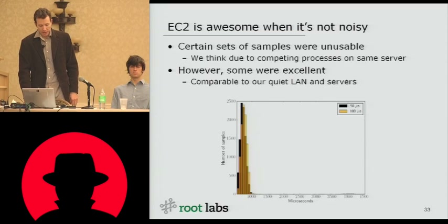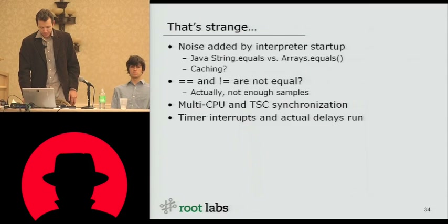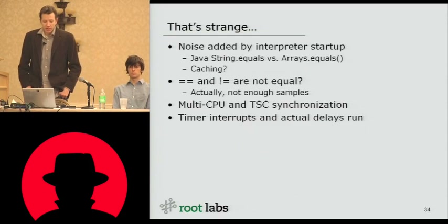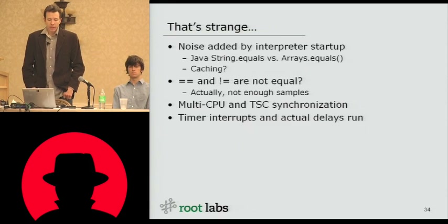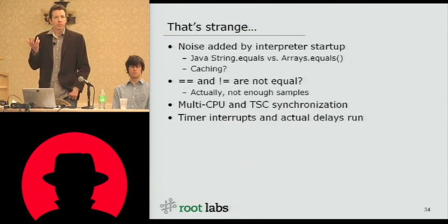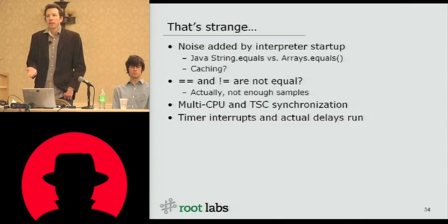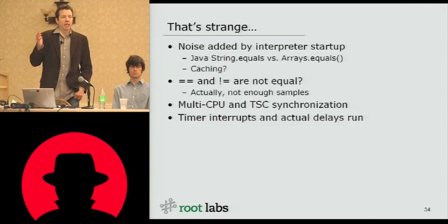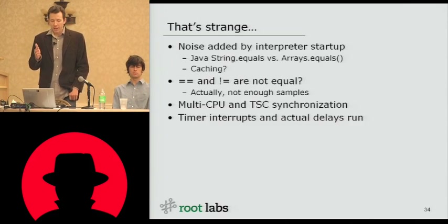Here's a distribution where you can see the clear distinguishability of the two distributions. We also had some strange things continuing to happen along the way. The first was a lot of noise added by interpreter startup. When we profiled different languages — Java, C, et cetera — C of course had very low overhead, but starting a Java VM is actually a pretty noisy event and would tend to disrupt our first few measurements of that system.